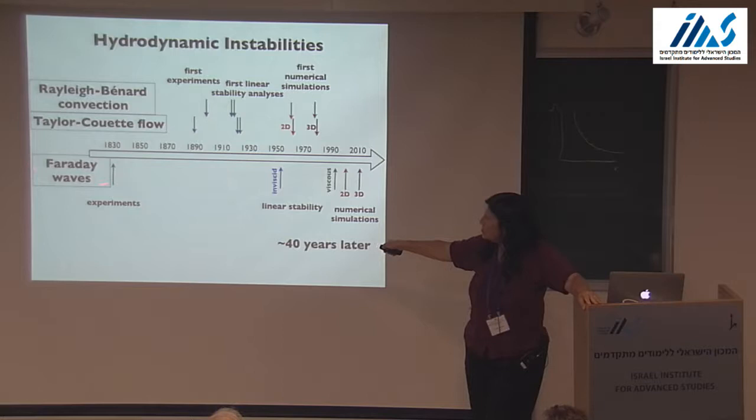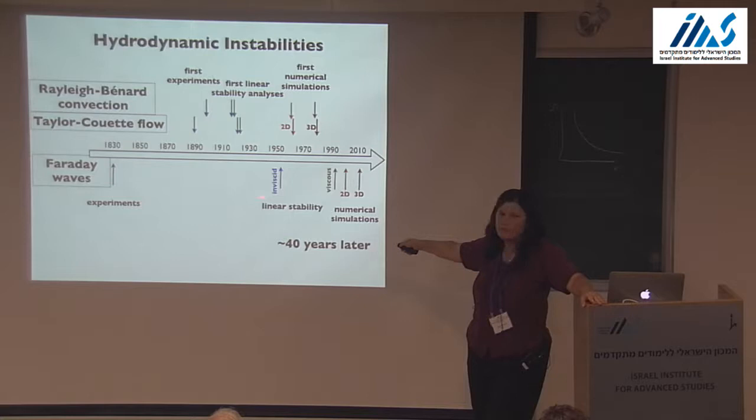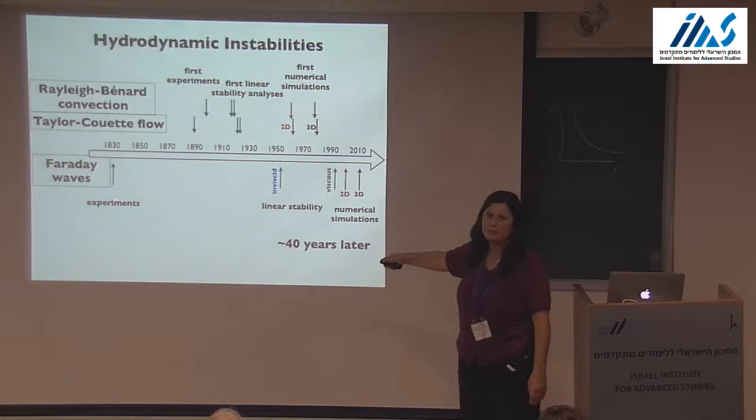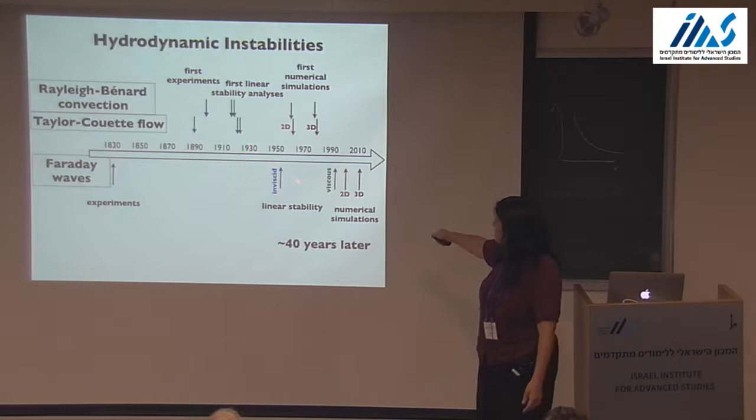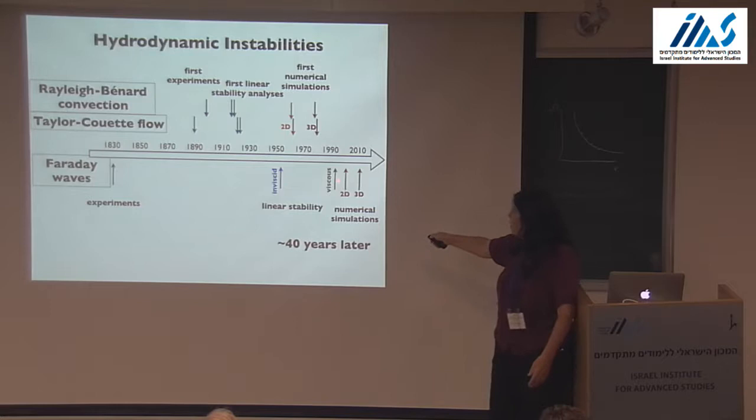Whereas the Faraday instability, which was discovered and scientifically published so much earlier, in 1831, the first linear stability analysis was done only in 1954 — a much bigger gap. And then there's a whole bunch of work starting in the 90s.